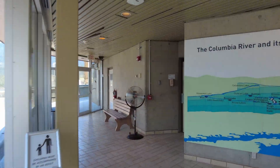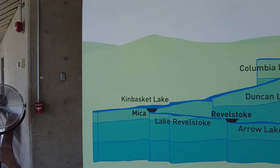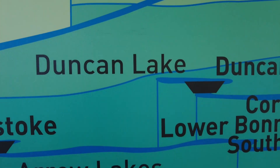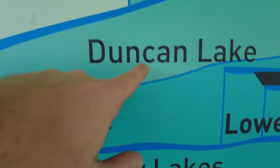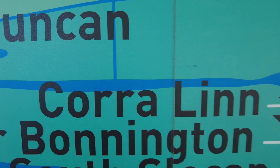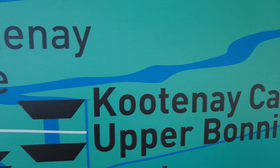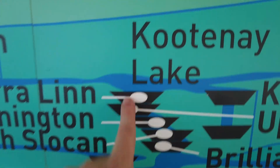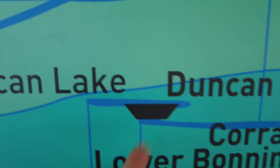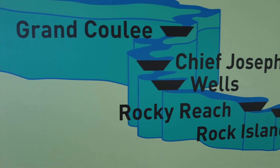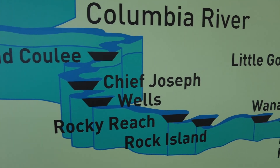Alright guys, inside the Revelstoke visitor center. The Columbia River and its tributaries: Mica, Kinbasket Lake, Revelstoke, Arrow Lakes, Duncan Lake, Columbia Lake, Keenlyside, Lower Bonnington, South Slocan, Kootenay Lake, Kootenay Canal, Upper Bonnington, Brilliant, Hugh Keenleyside. All these dams, guys - Duncan Dam, Grand Coulee, Chief Joseph, Wells, Rocky Reach, Rock Island.